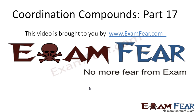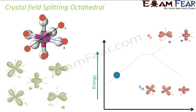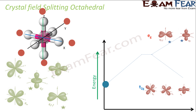Hello friends, this video in coordination — part 17 — is brought to you by examfier.com. For octahedral crystal field splitting, this is how it works. You can see the d orbitals, and I have marked two with stars because for these two the energy will go up higher. These are the ligands approaching from all directions — two from x, two from y, and two from z axis.